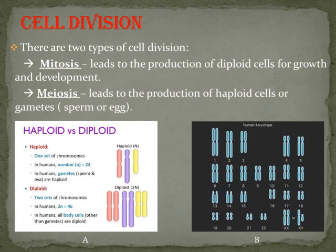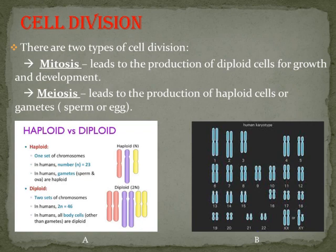Mitosis leads to the production of diploid cells for growth and development. Mitosis is only for growth and development — not for reproduction. Meiosis leads to the production of haploid cells, meaning the chromosome number is halved. Gametes are produced by meiosis, which takes place only in reproductive cells.